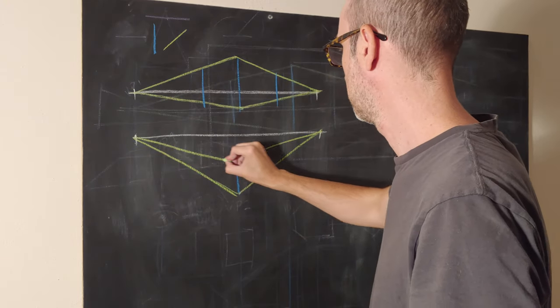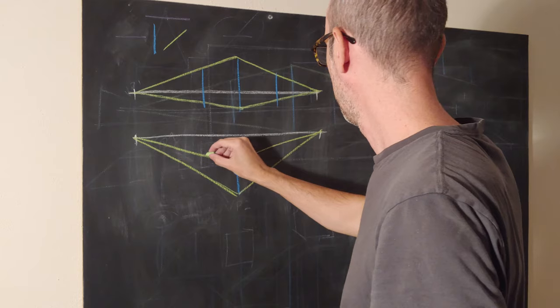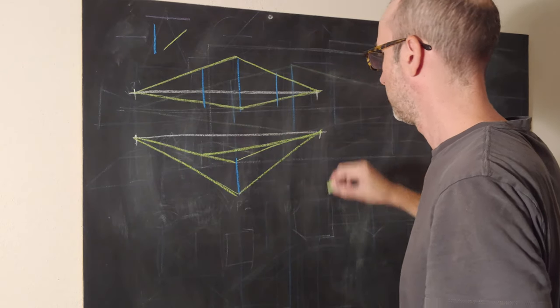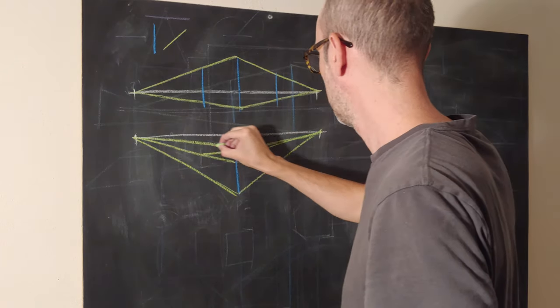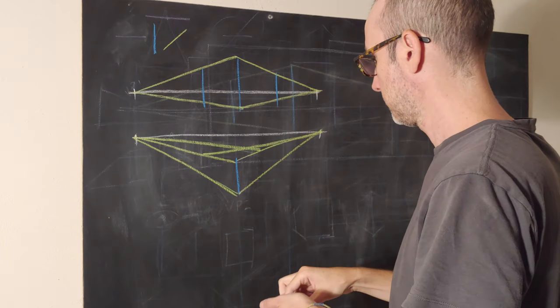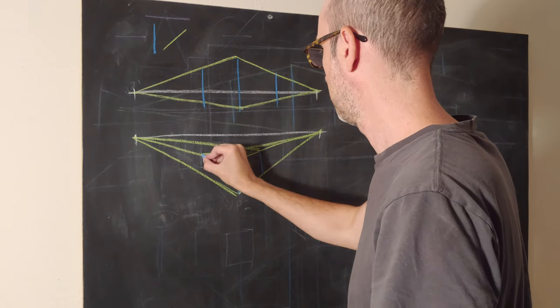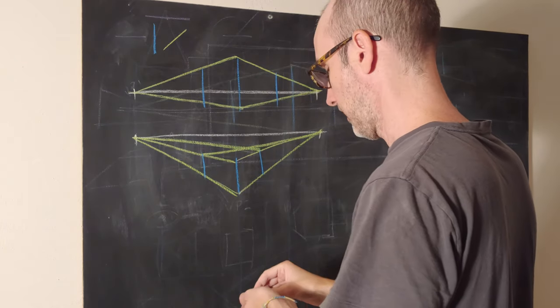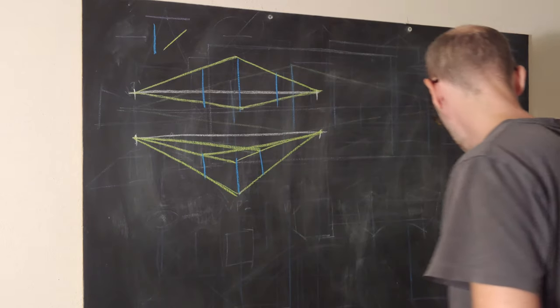This establishes our two-sided box, then we go three triangles, four triangles, cut, cut, and now we have our three-sided box.